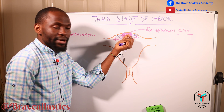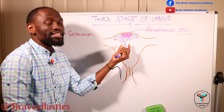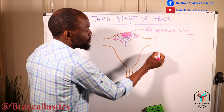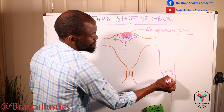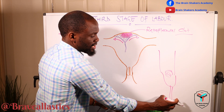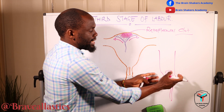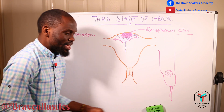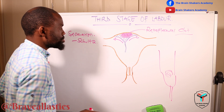As you see the placenta separating from the central aspect, it will emerge from the vagina with the fetal surface as the leading part, and the membranes then follow, housing the retroplacental clot within. What will present at the vulva is the fetal surface, which is the shiny part of the placenta, and the membranes will trail backwards. This is a method that we call the Schultze method — that is delivery of the placenta by the Schultze method.